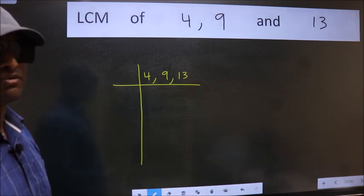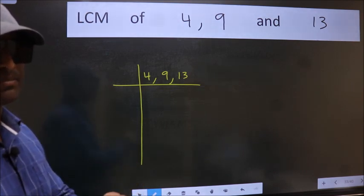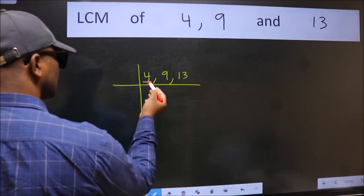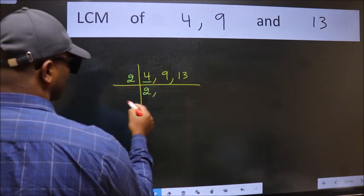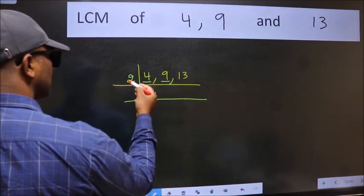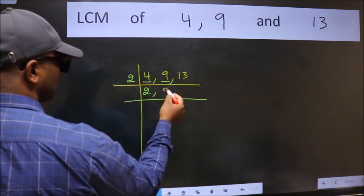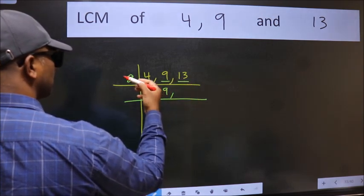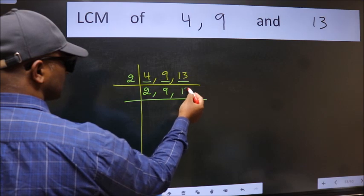Now we should focus on the first number which is 4 here. 4 is 2, 2's 4. The other number 9, not divisible by 2, so we write it down as it is. The other number 13, not divisible by 2, so we write it down as it is.